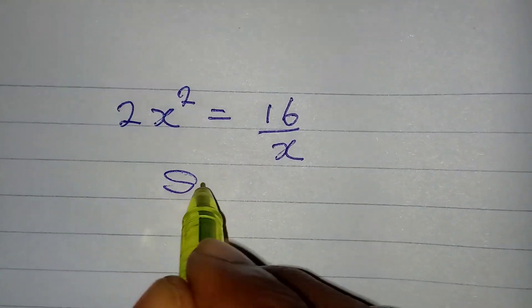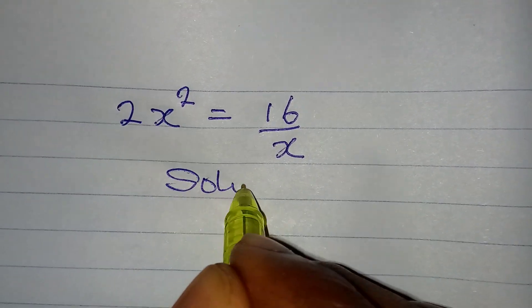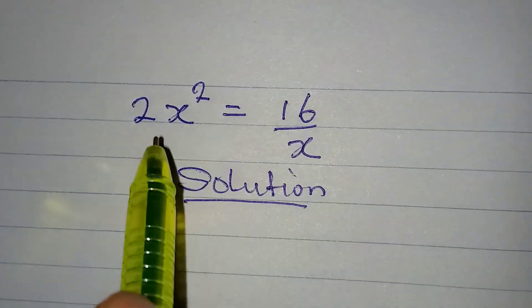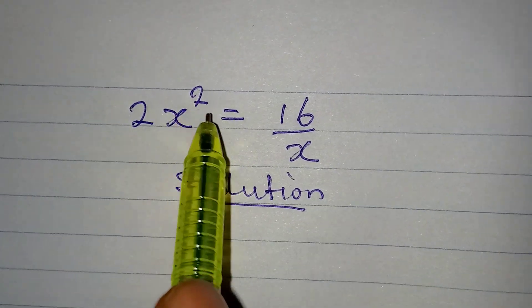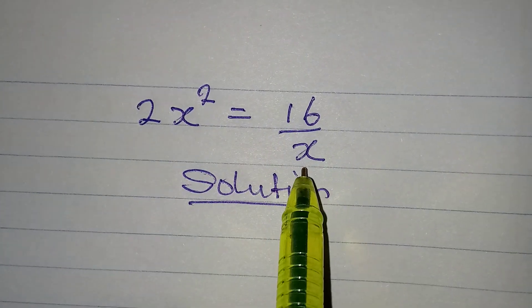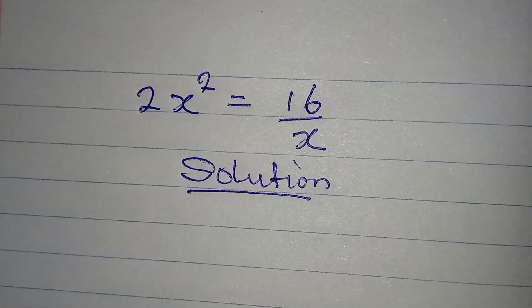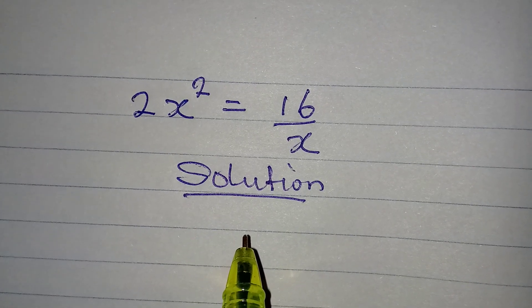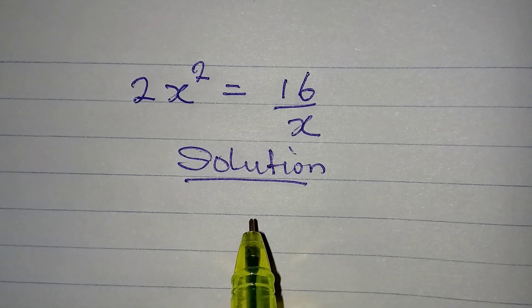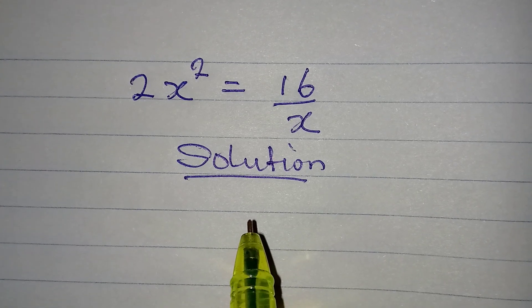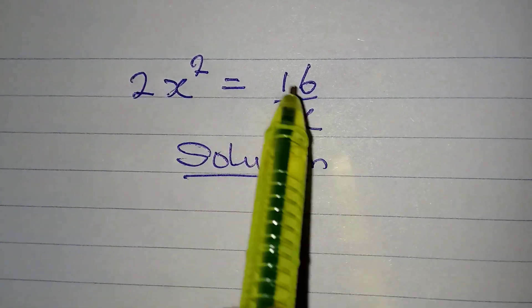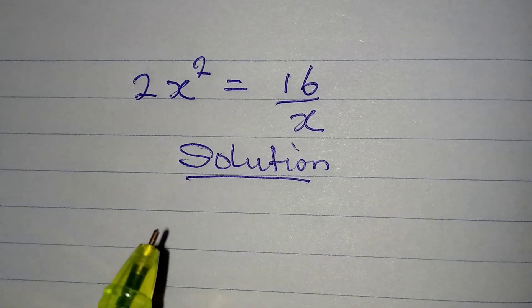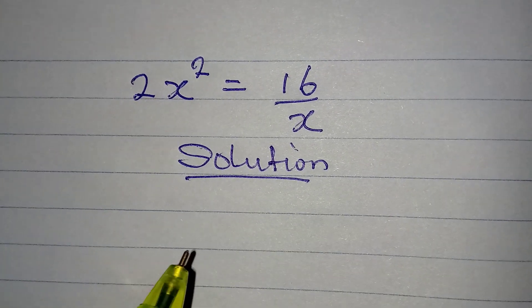Hello everyone, let's solve this problem very quickly. We have 2x squared equal to 16 over x and we are to solve this problem completely, meaning that we should get all the solutions. By looking at this, we are going to have three solutions because it's going to be cubic.